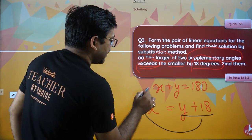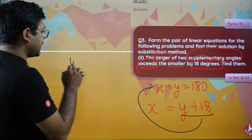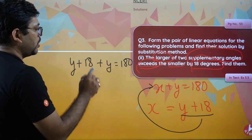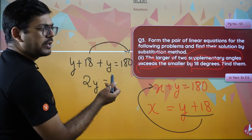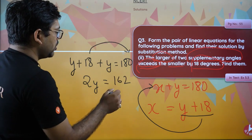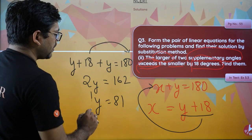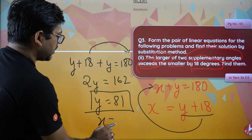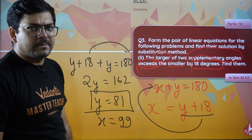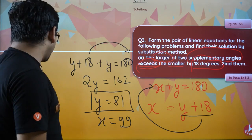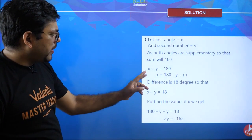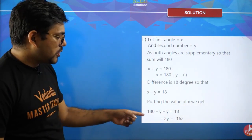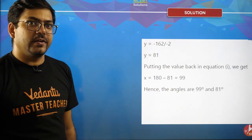Substituting y + 18 for x in x + y = 180: we get y + 18 + y = 180, which gives 2y + 18 = 180. Moving 18 to the other side: 2y = 162, so y = 81. Putting y = 81 back: x = 81 + 18 = 99. So x = 99 and y = 81. The two supplementary angles are 99 degrees and 81 degrees.